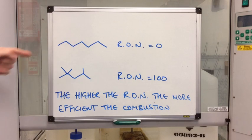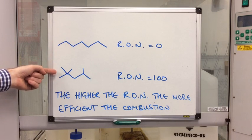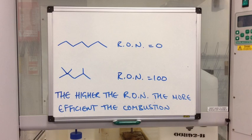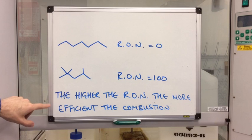So you can see straight away that obviously branching increases the RON value. And I've written up here, the higher the RON value, the more efficient the combustion.